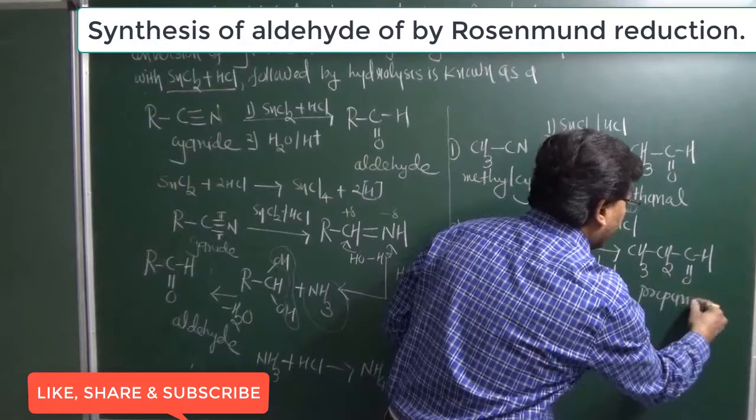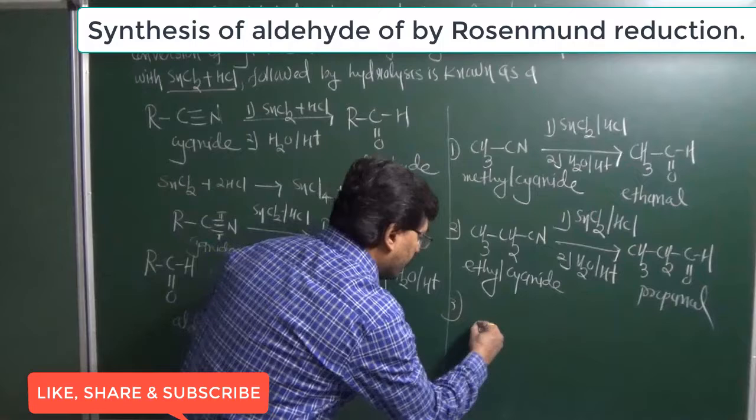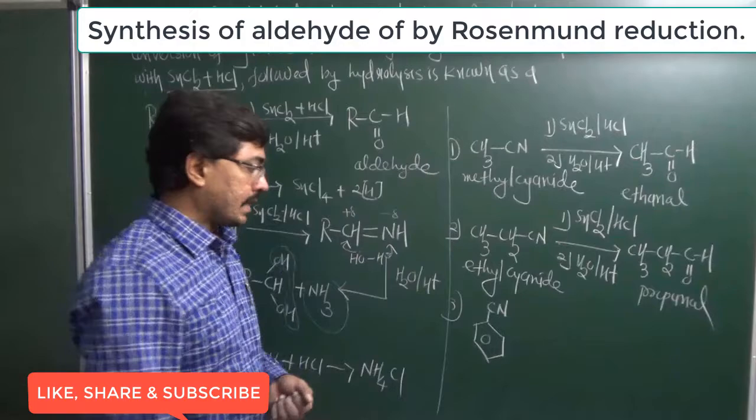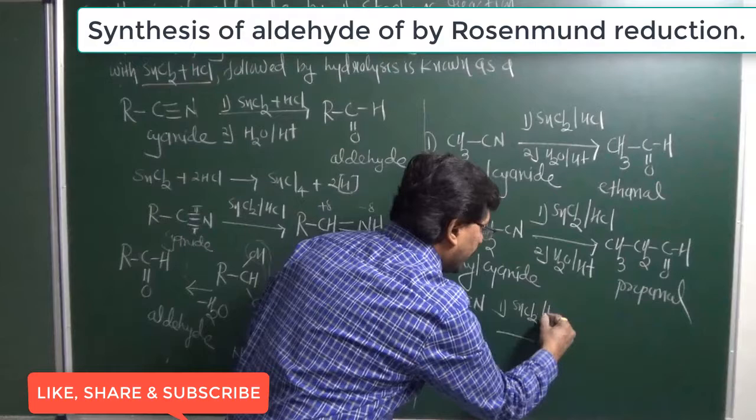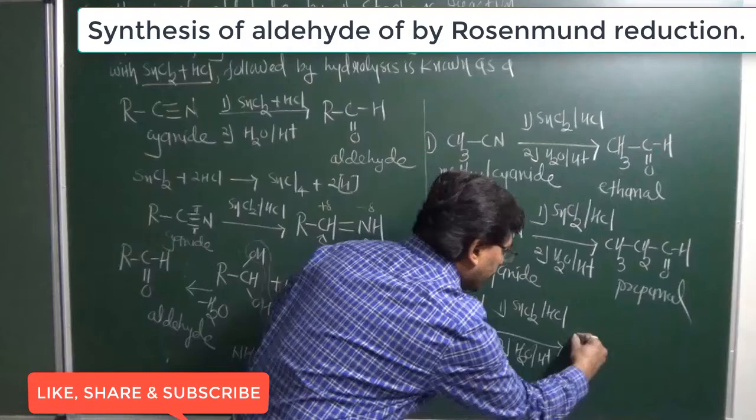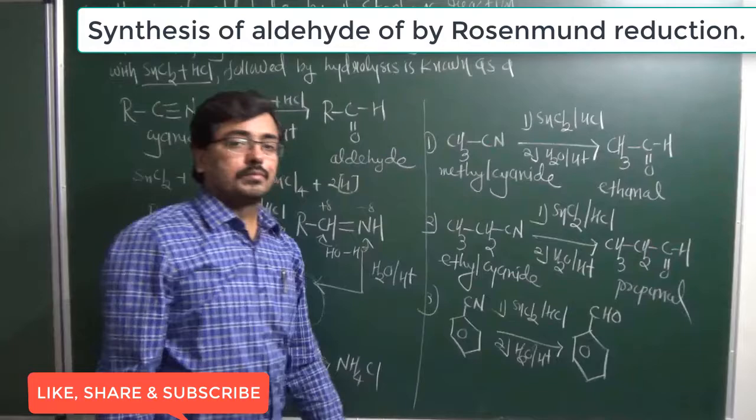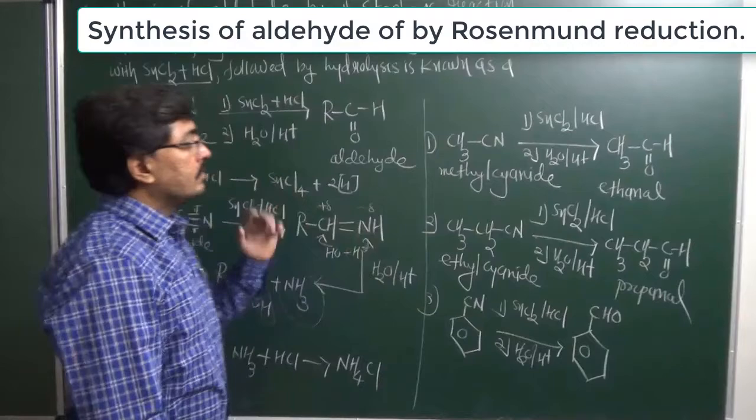Similarly, suppose we have an aromatic compound — phenyl cyanide. Using the same method, SnCl2 in HCl followed by hydrolysis in acidic medium, the cyanide group converts into an aldehyde group. So phenyl cyanide converts into benzaldehyde. By using the Stephen Reaction, aldehyde can be prepared, but ketone cannot be prepared. All the best, see you in the next lecture.